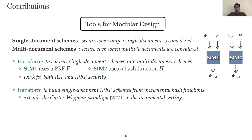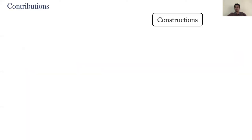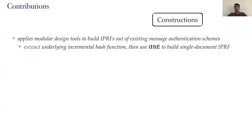We provide a transform that builds a single document IPRF scheme from an incremental hash function. This serves as an extension of the Carter-Wegman paradigm to the incremental setting. Our transform uses a symmetric encryption scheme in addition to the incremental hash functions. We then apply the previous transforms to build IPRFs based on various existing message authentication schemes such as PMAC, GMAC, XODMAC, and so on. The basic concept is to extract an incremental hash function from the message authentication scheme and use the IHTE transform to build an IPRF.